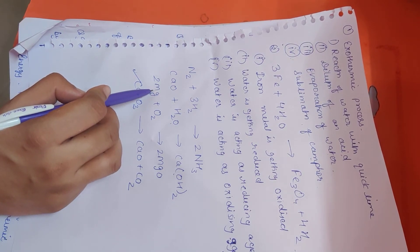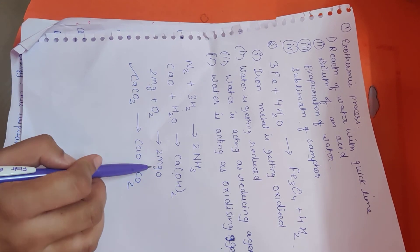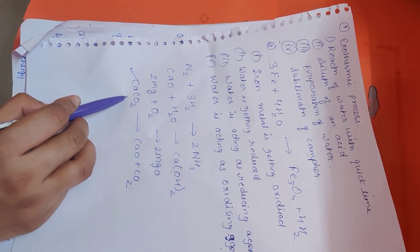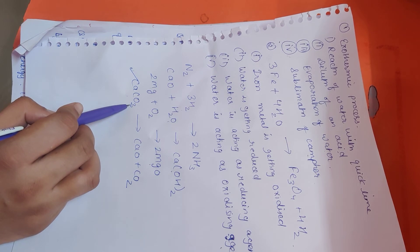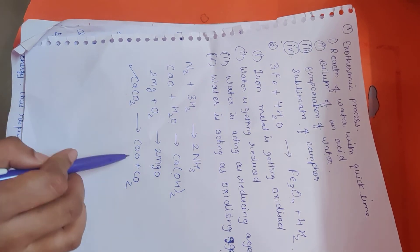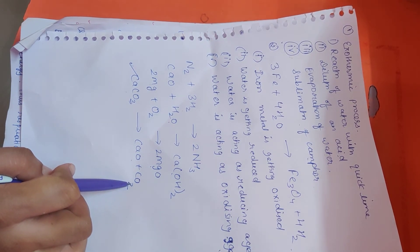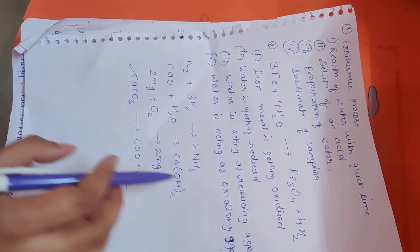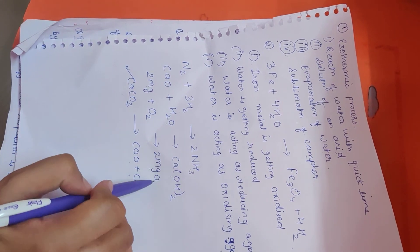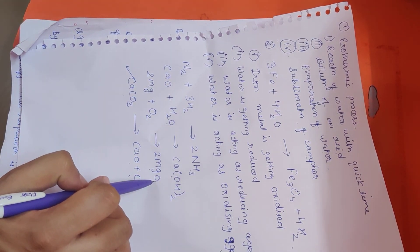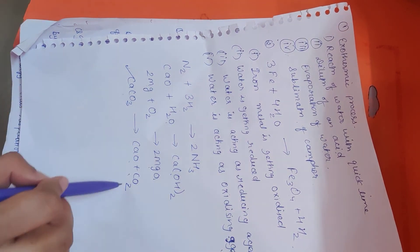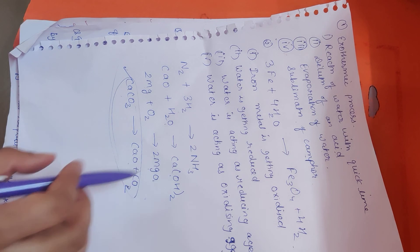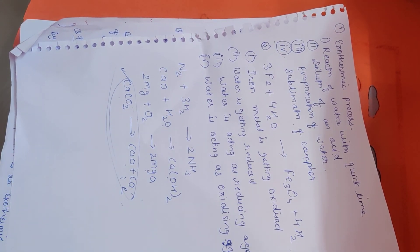Third option, combustion of magnesium in air. Again, magnesium reacts with oxygen, forms magnesium oxide, it is also an example of combination reaction. Last option is heating of limestone, CaCO3, that is calcium carbonate or limestone. When we heat it, it decomposes to form calcium oxide and CO2, that is carbon dioxide. So this is the decomposition reaction. So among these four options, these three are the examples of combination reaction, but the question was asked which is not a combination reaction. So this is not a combination reaction because this is a decomposition reaction. So here the optional questions get finished. Now we will start with the short answer type questions.